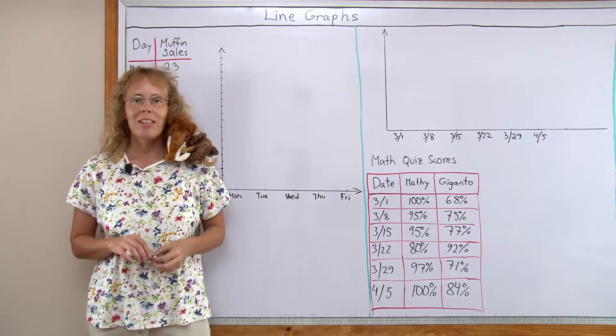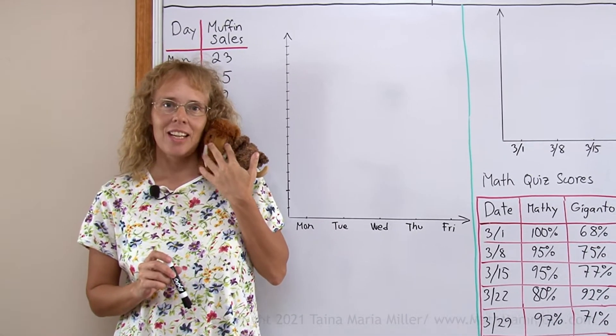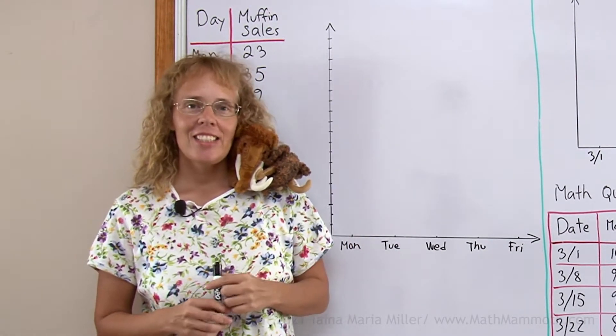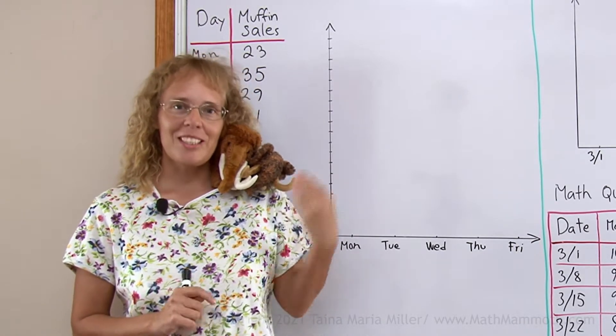Hello, my name is Marianne Miller from Mathmammoth.com and this is Matthew, my mascot and assistant. You might wonder who this is, he's Giganto, Matthew's cousin. Just for this video, we have Giganto II to join us.